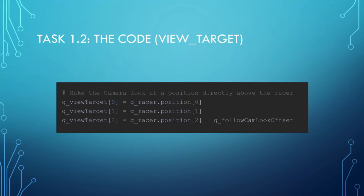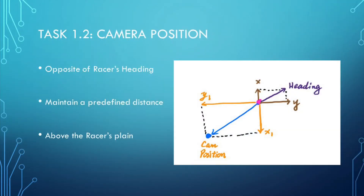In order to implement the above camera setting, two blocks of code are needed to set the position and the view target respectively. The g_view_target and g_view_position are two lists with indices 0, 1, 2 denoting their x, y, and z coordinates. As can be seen from the graph above, the x and y coordinates of the view target should be the same as that of the racer. The z coordinate of the view target should be the z coordinate of the racer plus the g_follow_cam_look_offset.